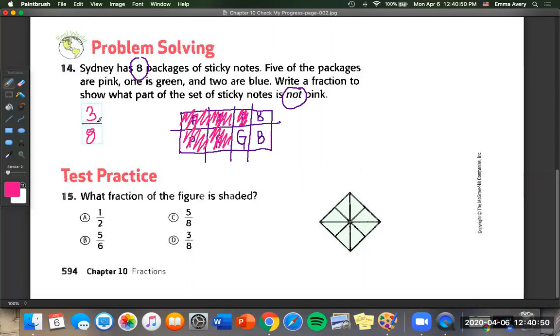Now number 15. What fraction of the figure is shaded? And let me color in this a little bit more so we can tell what actually is shaded. Okay, so we can see we have one, two, three, four, five pieces are shaded out of a total of one, two, three, four, five, six, seven, eight. So is that one of our answers over here? Yep. Five eighths is our answer.